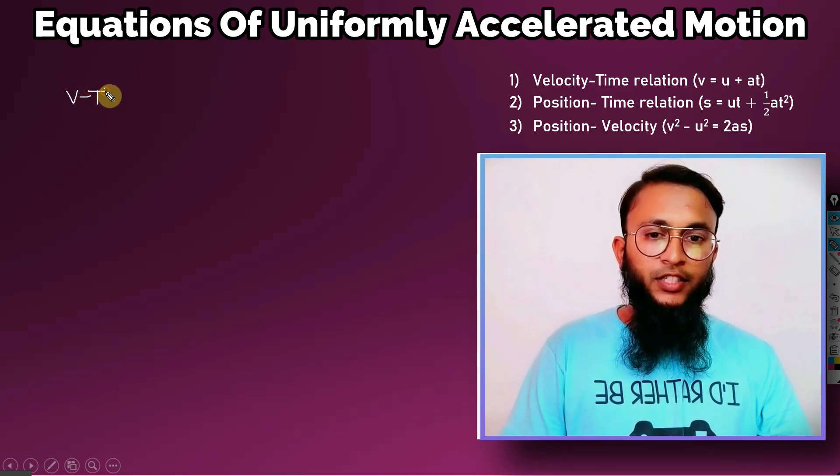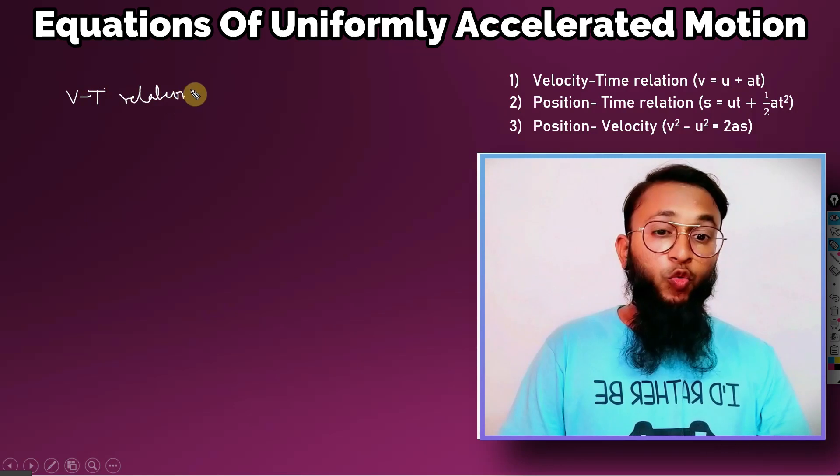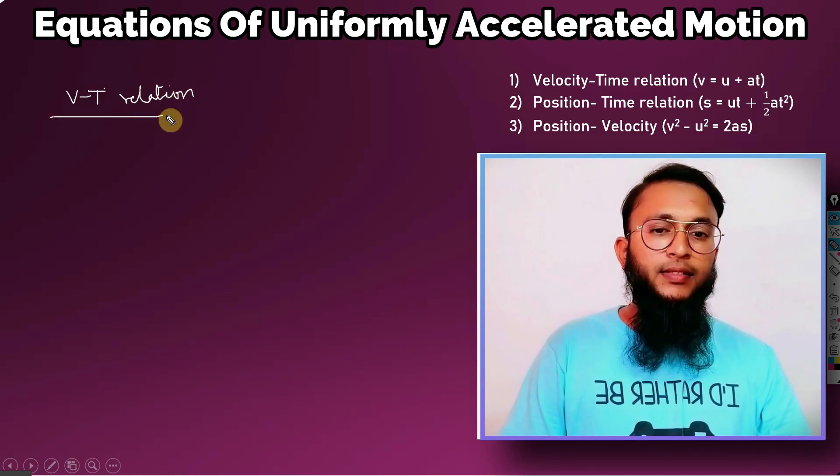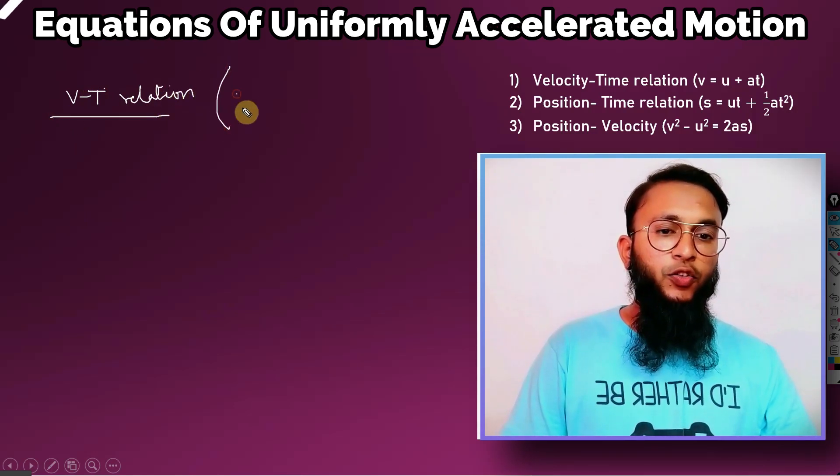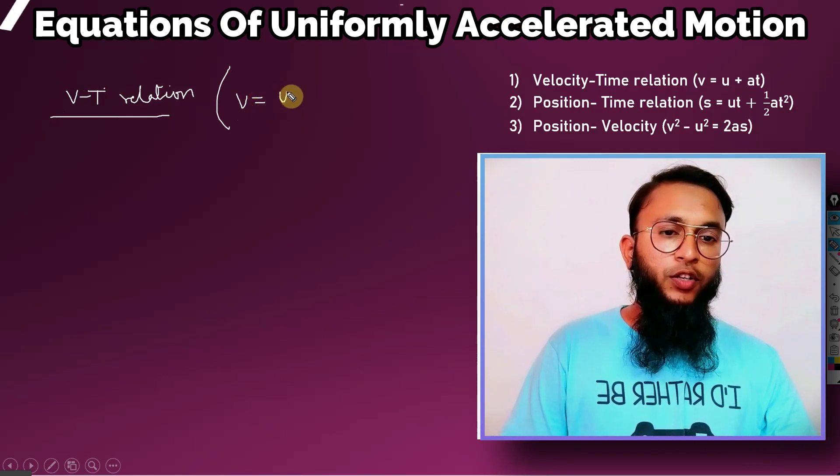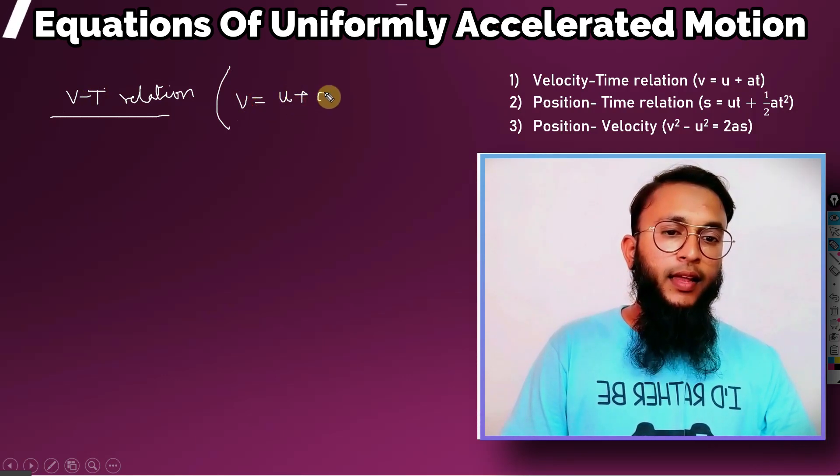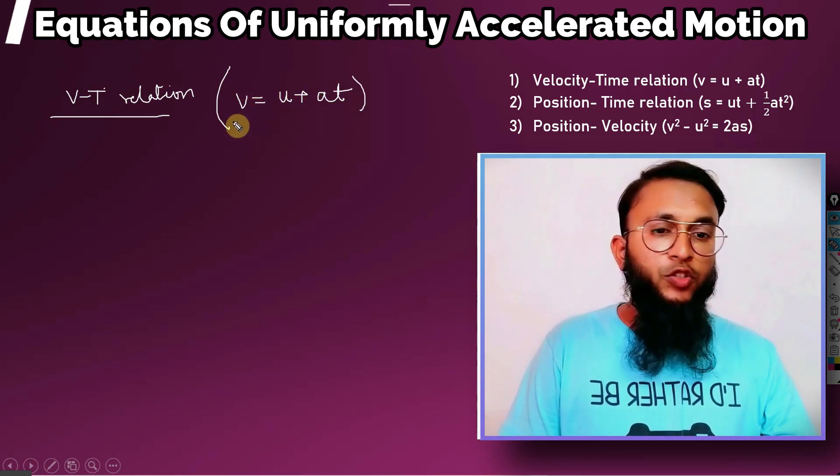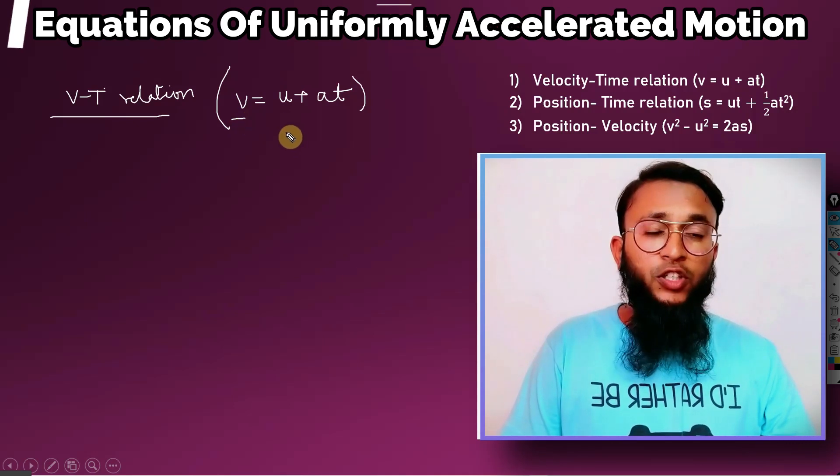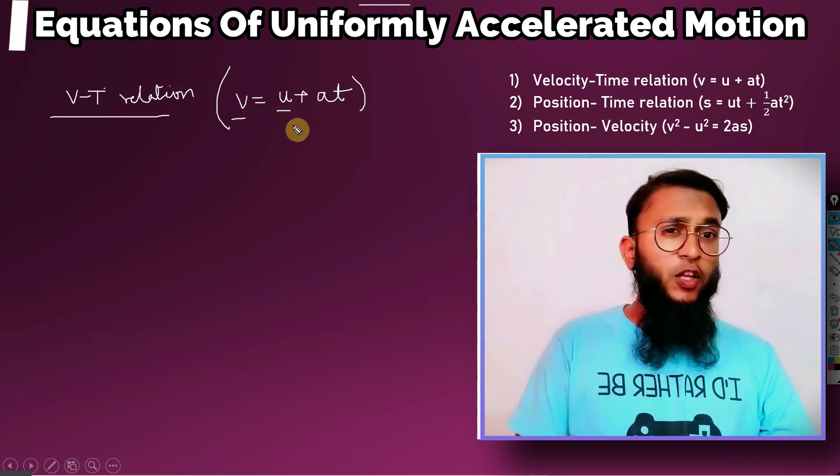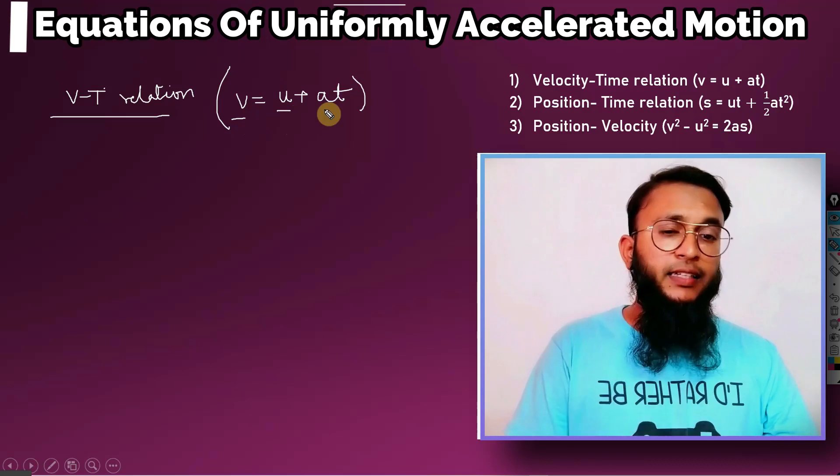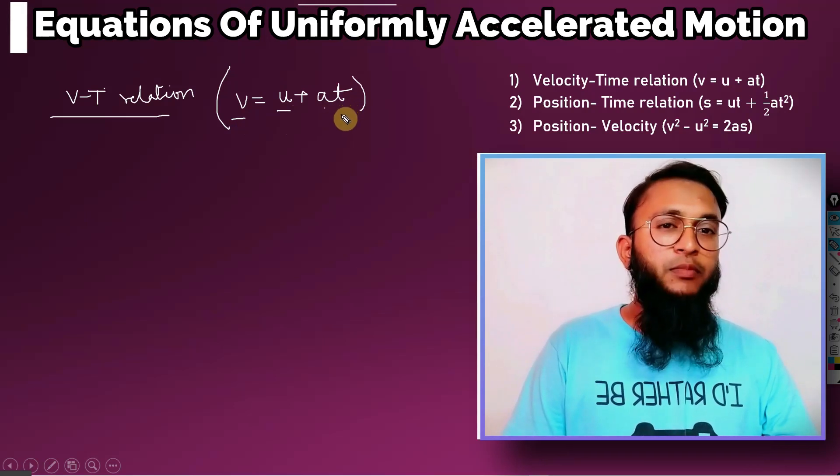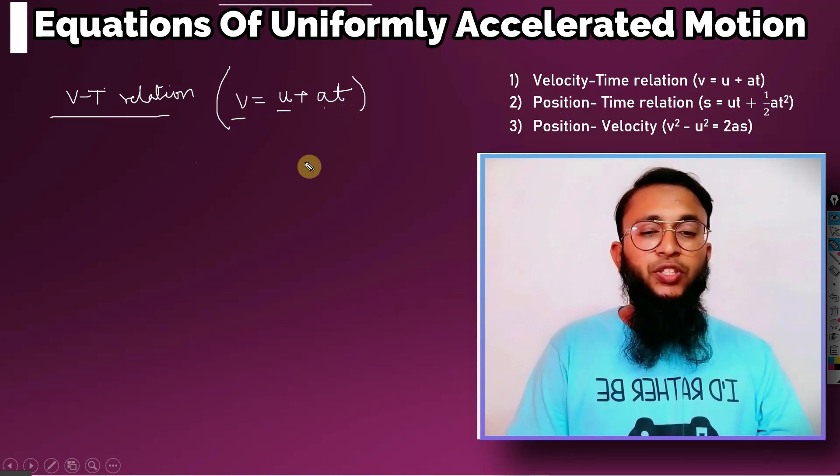The first equation is velocity-time relation which is v equals u plus at. You know that v equals u plus at. Here v equals velocity which is final velocity of the body, u is initial velocity of the body, a is the acceleration, and t is the time taken.